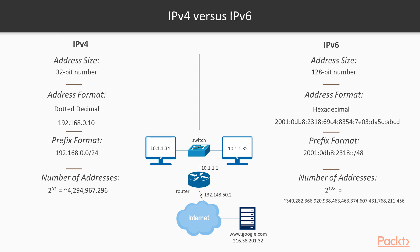As a network admin, or really any type of computer user, we typically come across two types of IP addresses: a version 4 IP address and a version 6 IP address.